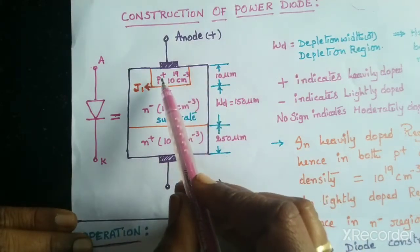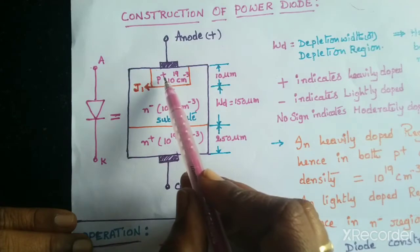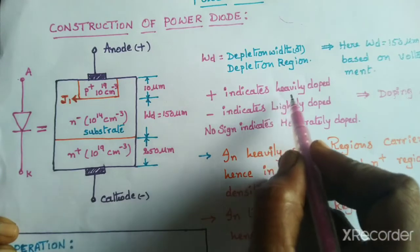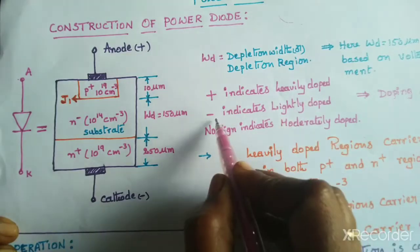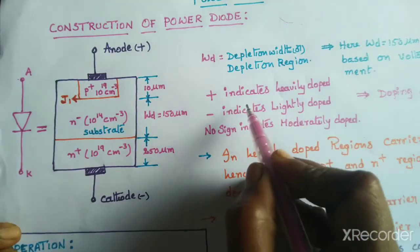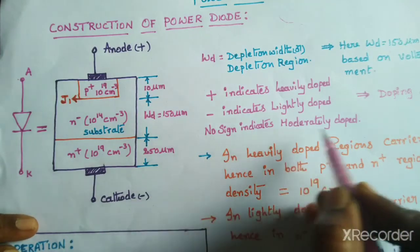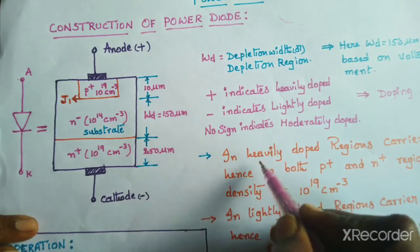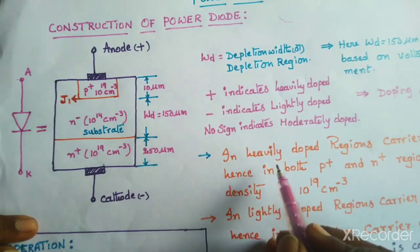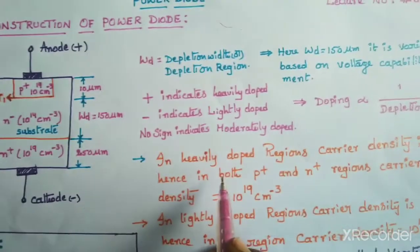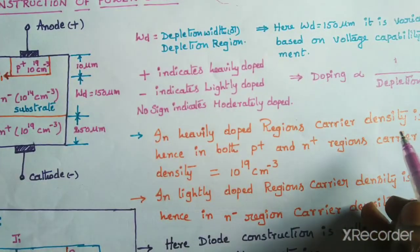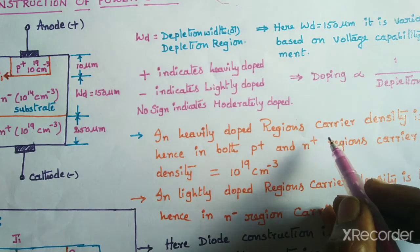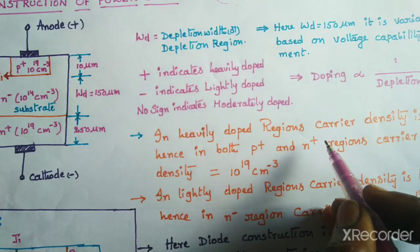Here for P and N, we are representing with plus and minus signs. Plus indicates heavily doped, minus indicates lightly doped, and no sign indicates moderately doped. Whenever any layer is heavily doped, that means the charge carrier density is more, but the thickness of that particular layer is less.